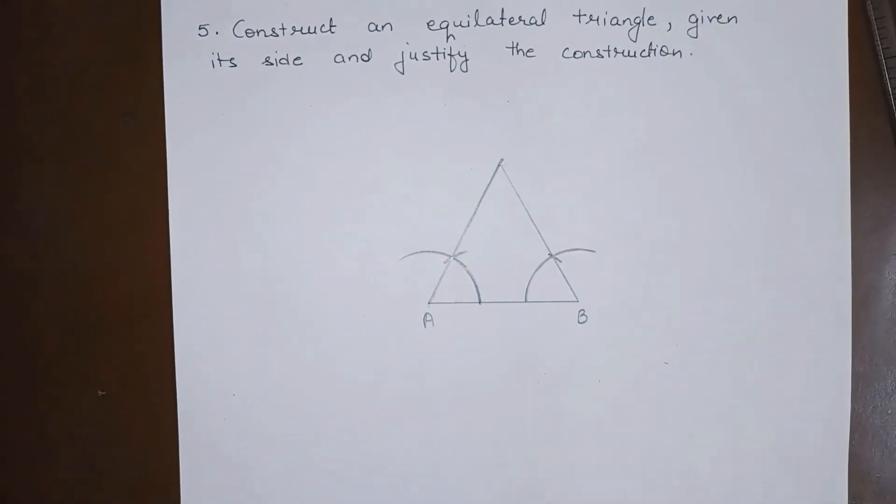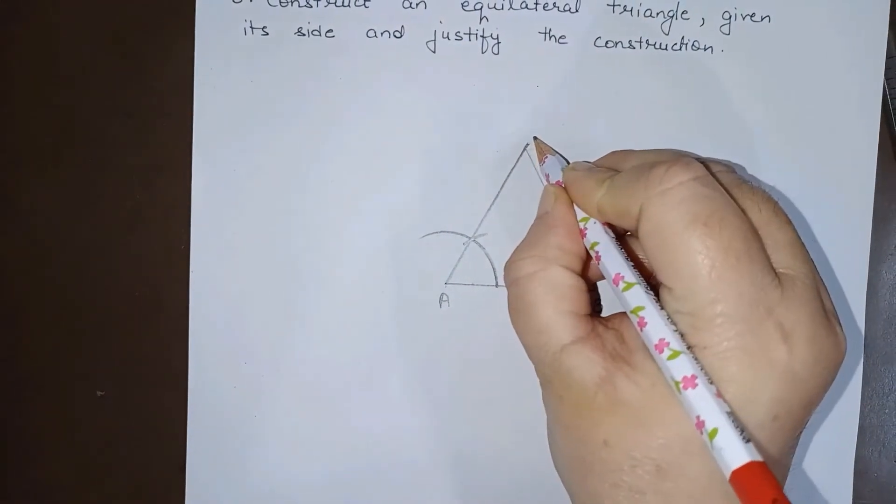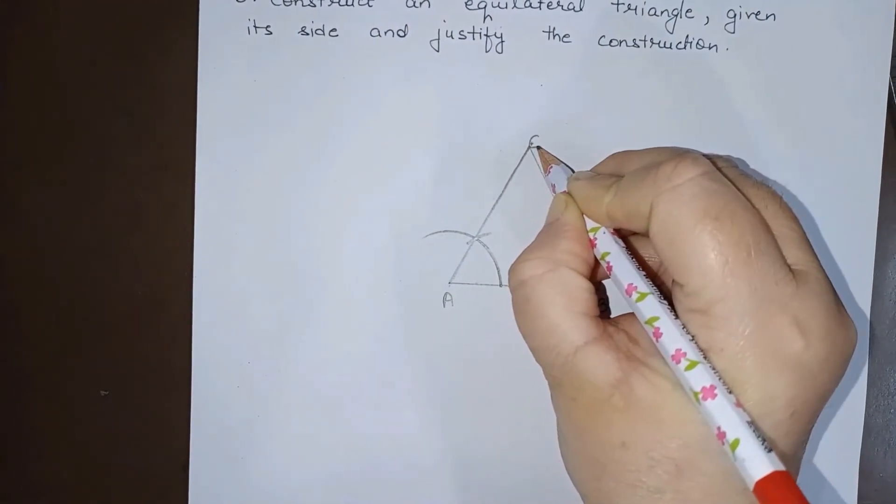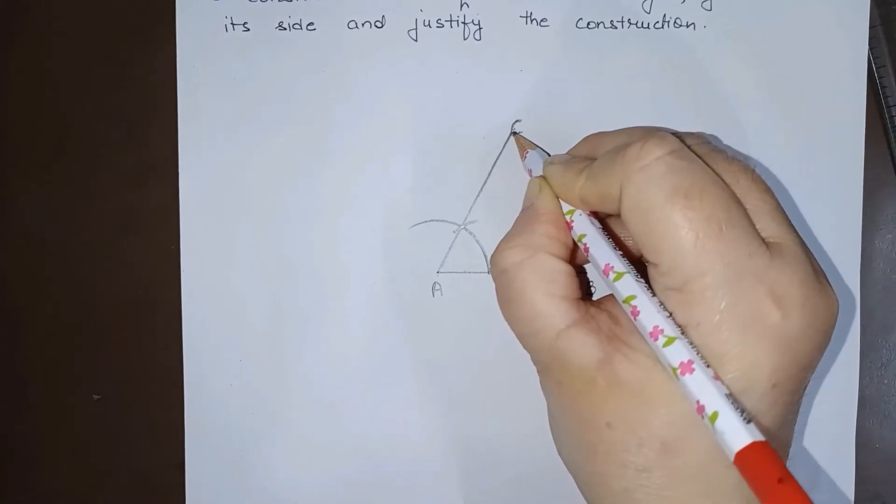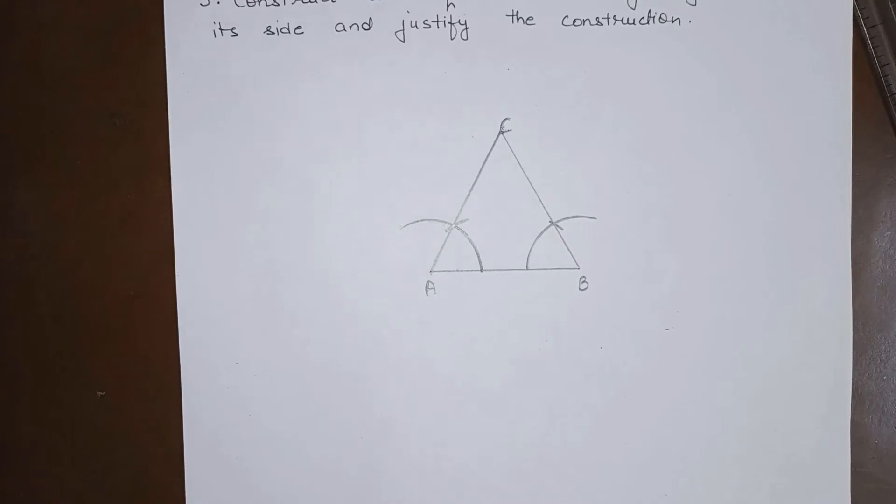So now where these two lines are intersecting, let me represent that point with C. So I am getting triangle ABC.